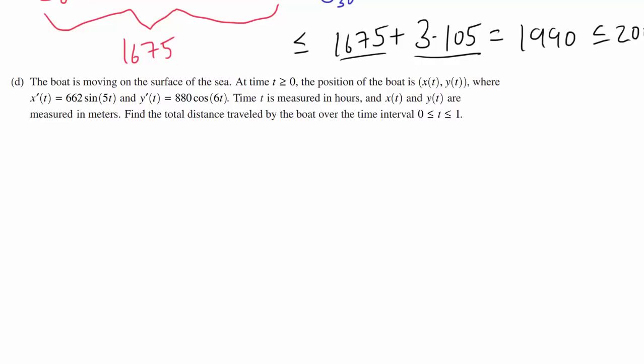Let's go on. Part D: the boat is moving on the surface of the sea. Exciting. At time t ≥ 0, we have this parametric function of our position as function of time. Where they're giving us x'(t) and y'(t). That's very nice. We don't have to differentiate anything. Time t is measured in hours, and x(t) and y(t) are measured in meters. They want us to find the total distance traveled, or the arc length of the boat over the time interval from 0 to 1.